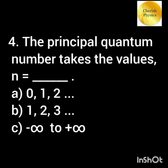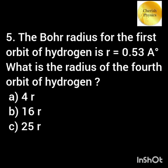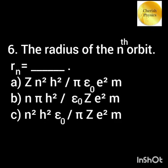The principal quantum number takes the values n = 1, 2, 3, ... The Bohr radius for the first orbit of hydrogen is r = 0.53 Å. What is the radius of the fourth orbit of hydrogen? The radius of the nth orbit is r_n = n² × 0.53 Å.